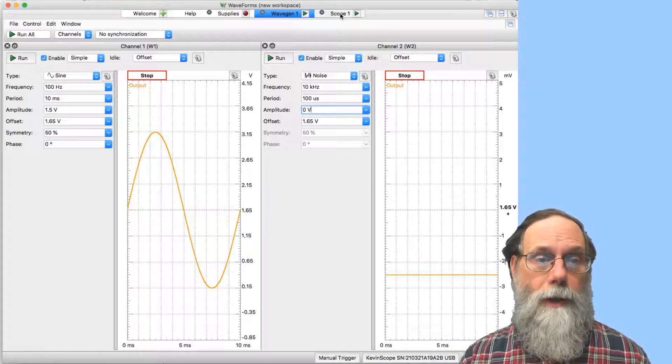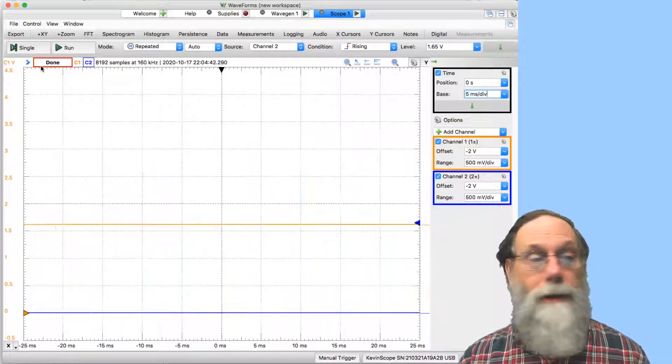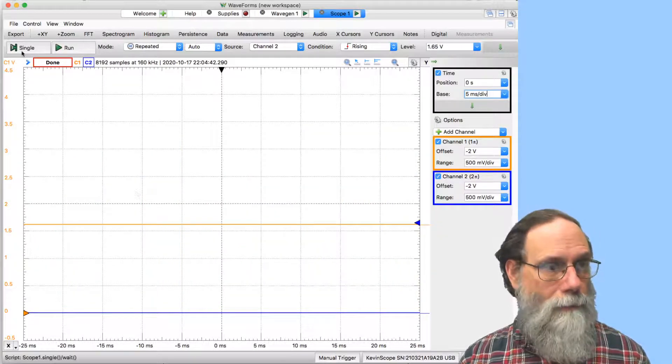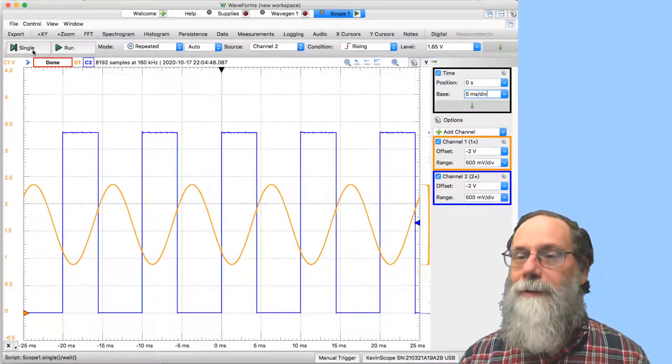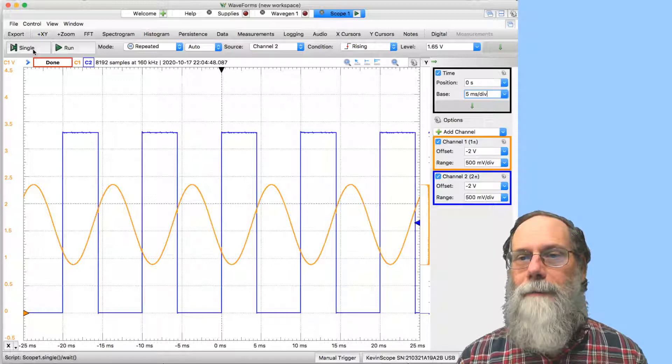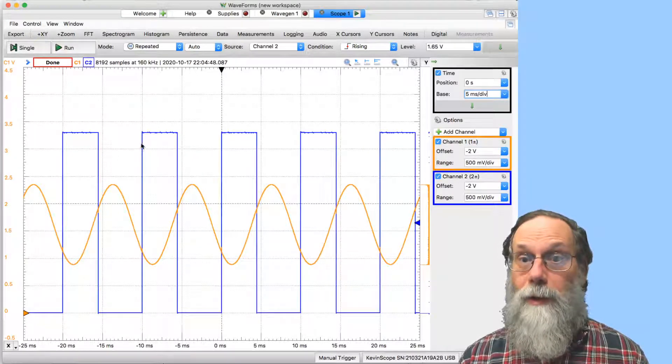So let's go over to the scope and do a single run here, and you can see we indeed have a very clean sine wave with an output that's a square wave. The square wave is going all the way from 0 to 3.3 volts.